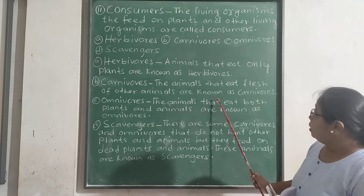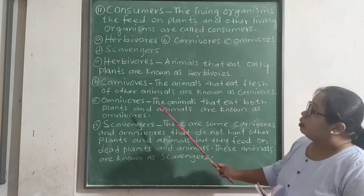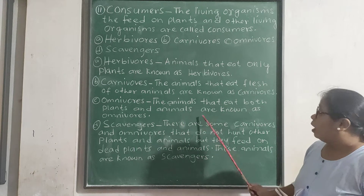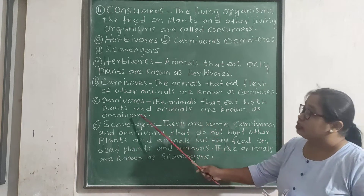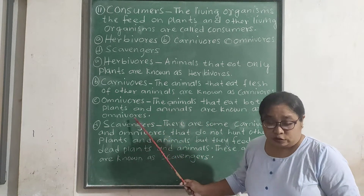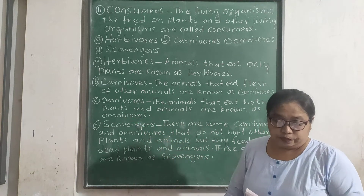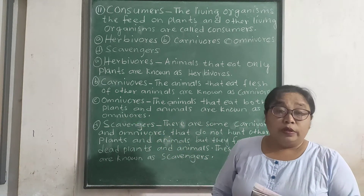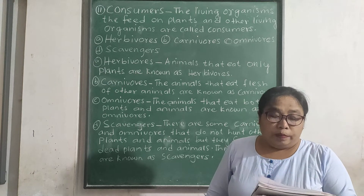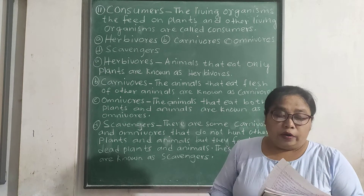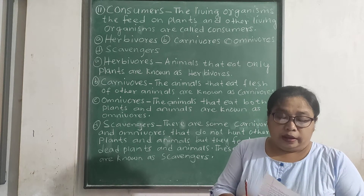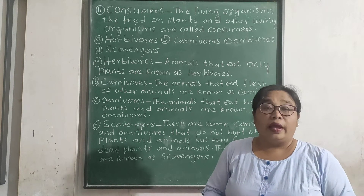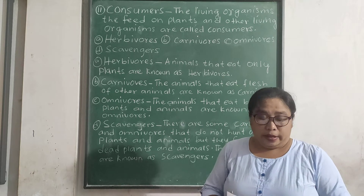Now let us discuss omnivores. The animals that eat both plants and animals are known as omnivores. For example, bear, and birds like crow and woodpecker.